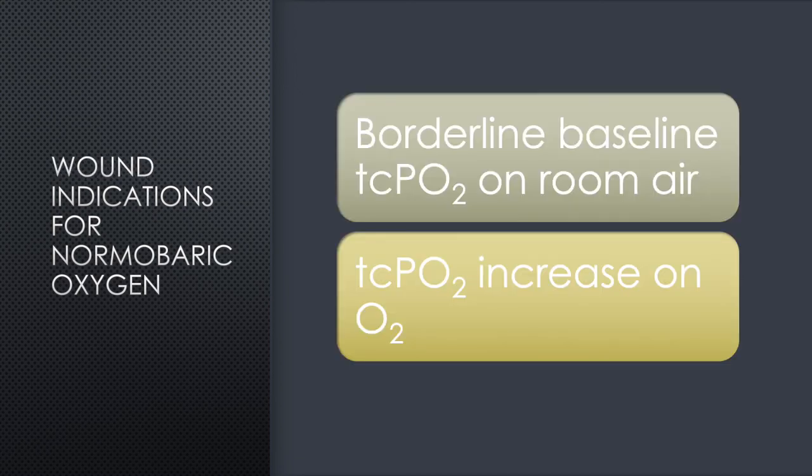Local indicators that would point towards a favorable outcome with normobaric oxygen therapy include a room air TcPO2 of 30 mmHg, especially if the value increases on administration of oxygen. Please remember that edema is the most significant contributor to false low TcPO2 values. When in doubt, elevate the patient's limb and repeat the measurement when the edema has subsided.